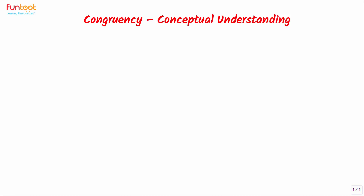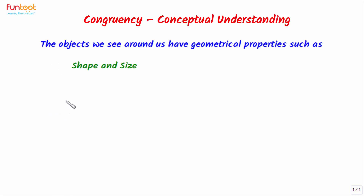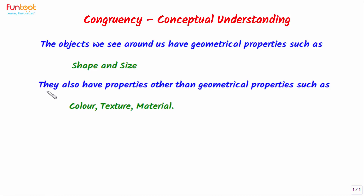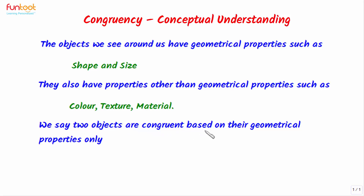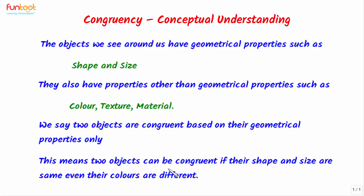Let's understand the concept of congruency. The objects we see around us have geometrical properties such as shape and size. They also have properties other than geometrical properties, such as color, texture, and material they are made up of. We say two objects are congruent based on their geometrical properties only. This means two objects can be congruent if their shape and size are the same, even if their colors, texture, and material are different, as long as their shape and size are the same.